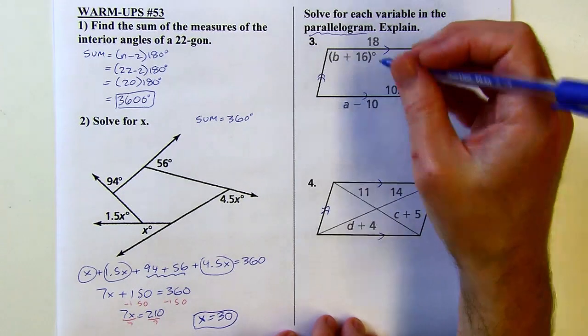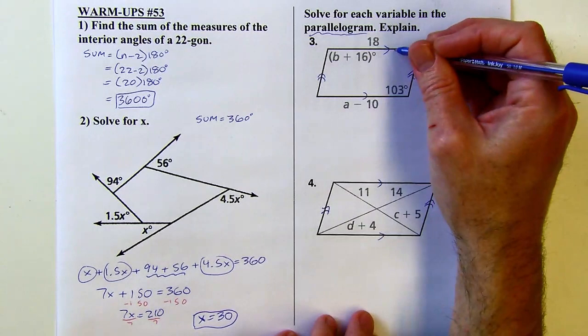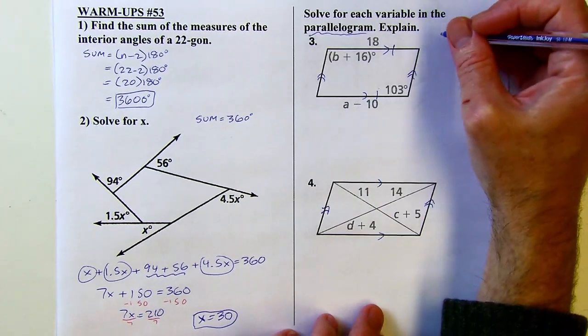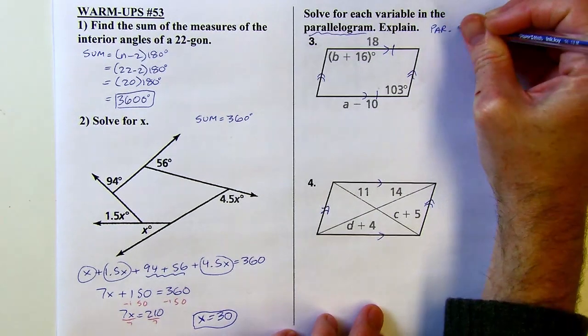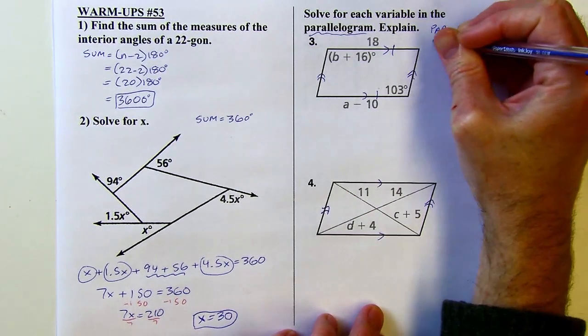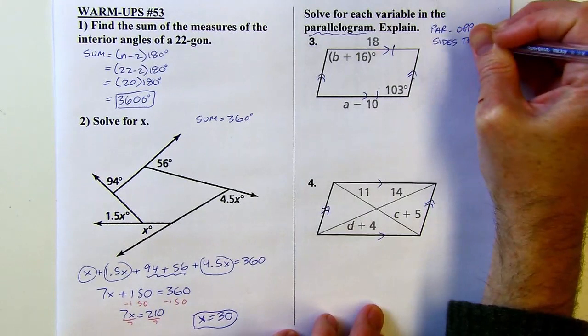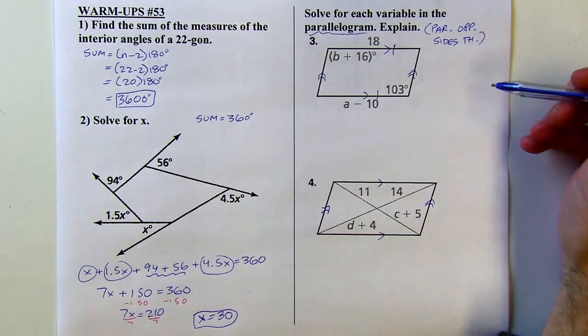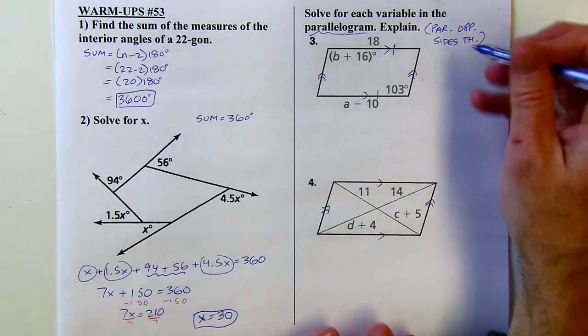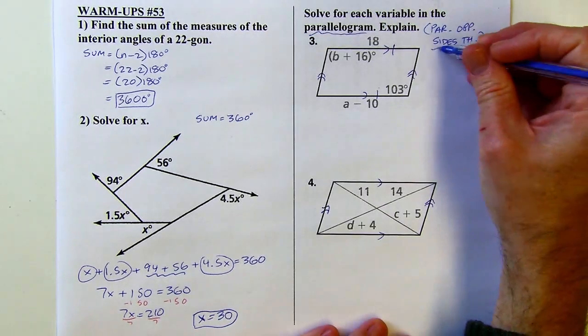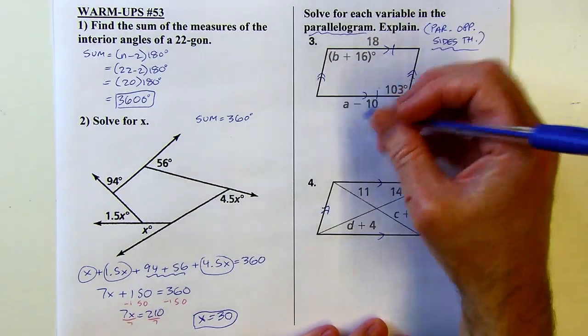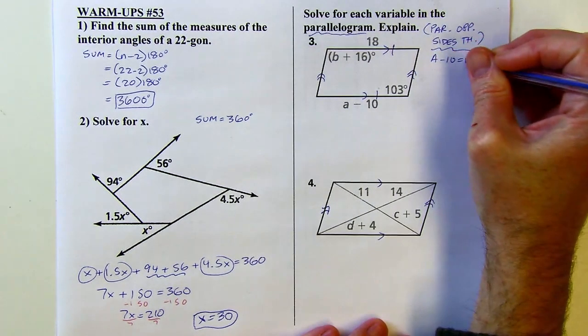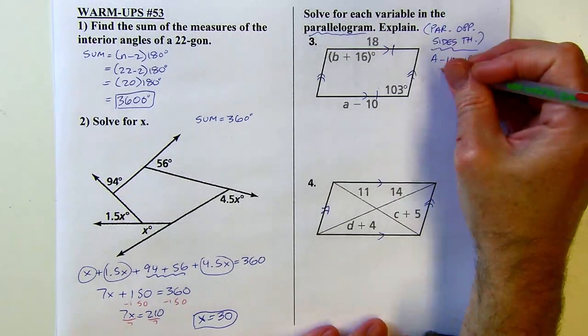One thing that's true about parallelograms, the opposite sides are going to be congruent. So using the parallelogram opposite sides theorem, I'm just abbreviating there to give myself some more room. This is my explanation, and I'm just saying what theorem I'm using. That's going to allow me to write that a minus 10 equals 18. Okay. Then I just add 10, and a is going to equal 28.